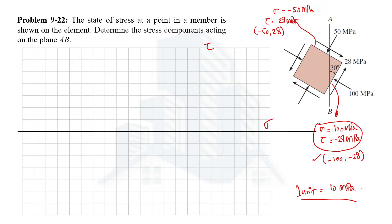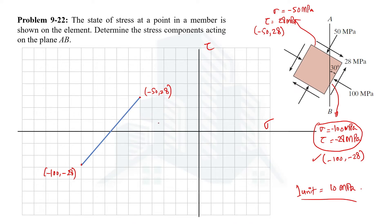Starting with the first point: rightward is positive and leftward is negative, so we move 10 units leftward for 100 MPa, then 28 units downward, giving us the point at minus 100 and minus 28 MPa. The second point is at minus 50 and plus 28 MPa — 5 units leftward and 28 units upward. Joining these two points gives us the diameter of the Mohr's circle, from which we can draw the full circle.